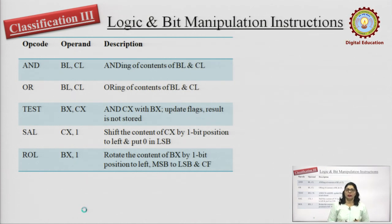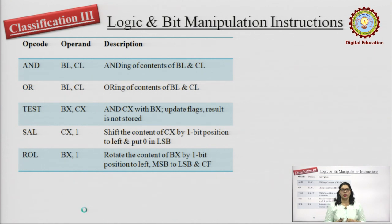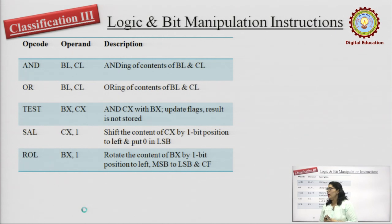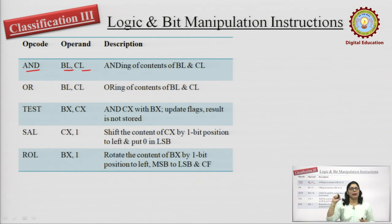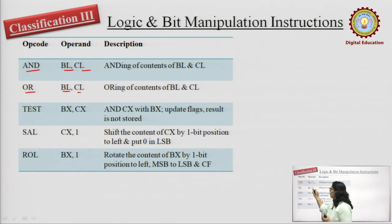The third classification is logic and bit manipulation instructions, which include AND-ing, OR-ing, shifting, and rotating. If written as AND BL, CL, the 8-bit numbers stored in BL and CL are ANDed together. Similarly, OR BL, CL performs OR-ing of the two numbers stored in BL and CL. These examples use 8-bit registers; for 16-bit numbers, write BX and CX instead of BL and CL — the same applies for OR-ing.